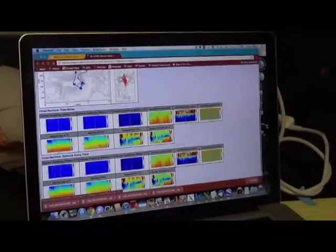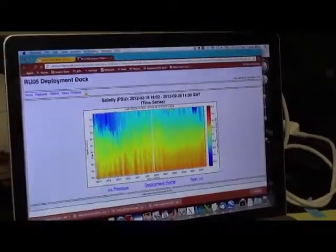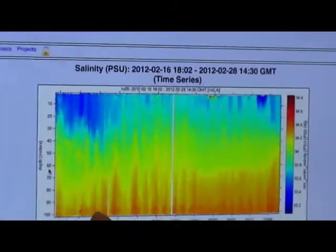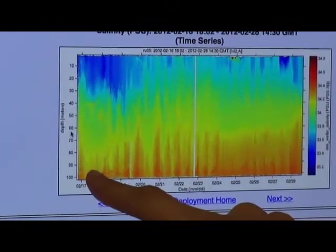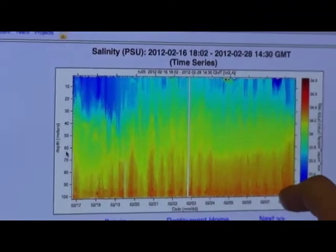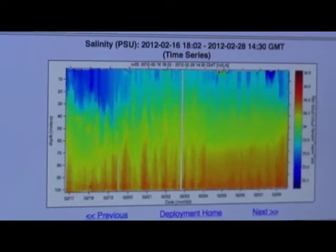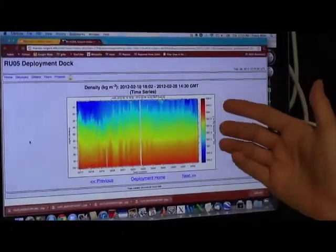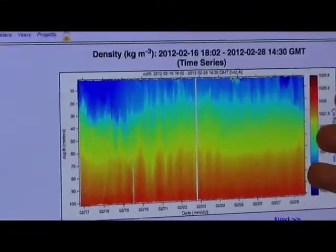But if you look at salinity, you see things in an ordered way. You see fresh water at the surface and salty water at the bottom. So when you look at density then, the density looks almost just like the salinity plot.